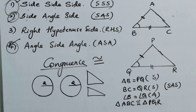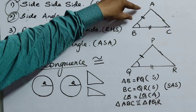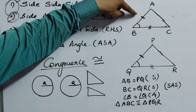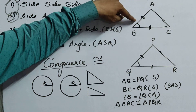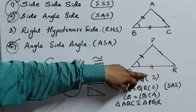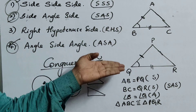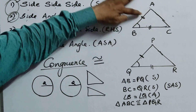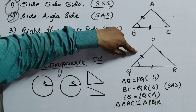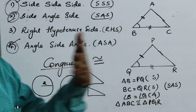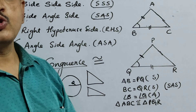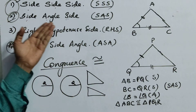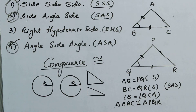The definition for SAS property: in a triangle, two sides and one angle is equal to two sides and one angle of another triangle, then the two triangles are said to be congruent. That is SAS congruency.